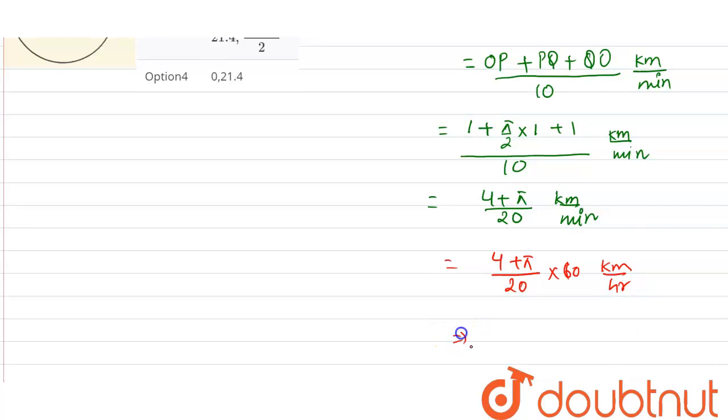So solving this, we will get it as 21.4 kilometer per hour. So the average speed comes out to be 21.4 kilometer per hour.